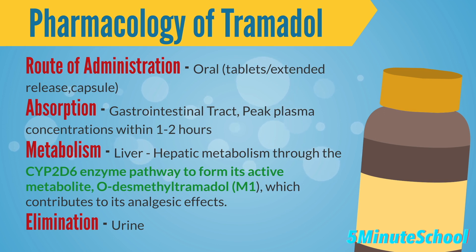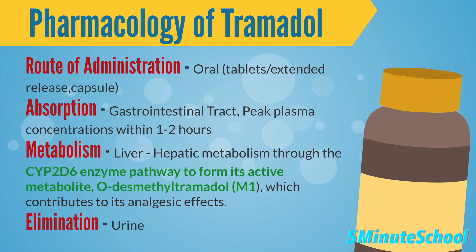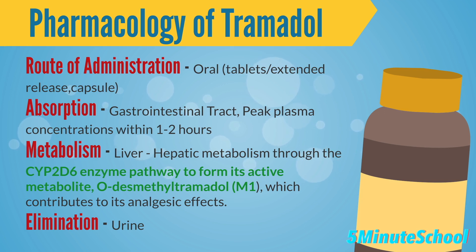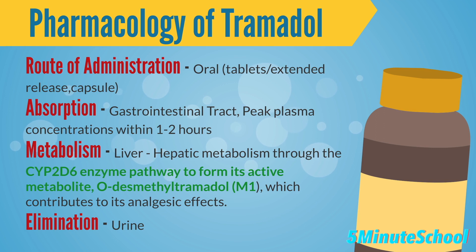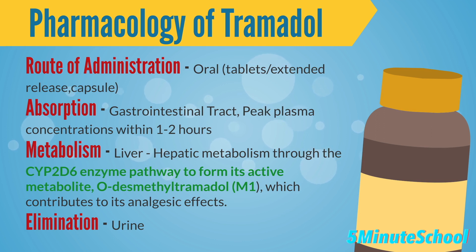Tramadol is well absorbed after oral administration, with peak plasma concentrations reached within one to two hours. It undergoes hepatic metabolism through the CYP2D6 enzyme pathway to form its active metabolite O-desmethyltramadol (M1), which contributes to its analgesic effects. The drug and its metabolites are primarily excreted in the urine.